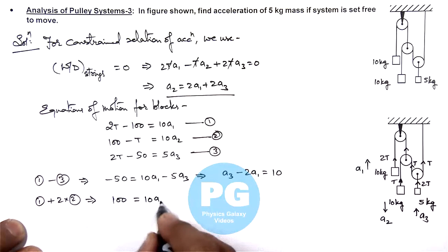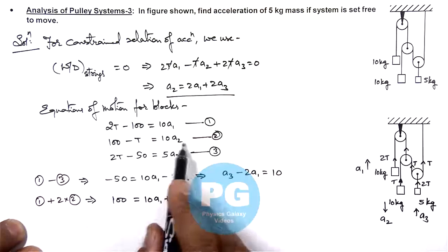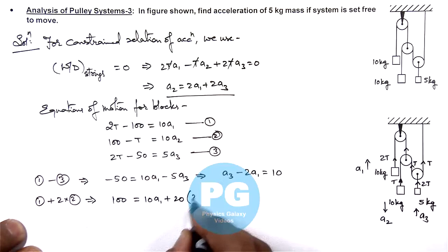And on the right hand side, this will be 10 a1 plus twice of 10 a2, that is 20 times a2. a2 I can substitute from this equation which is 2 a1 plus 2 a3.